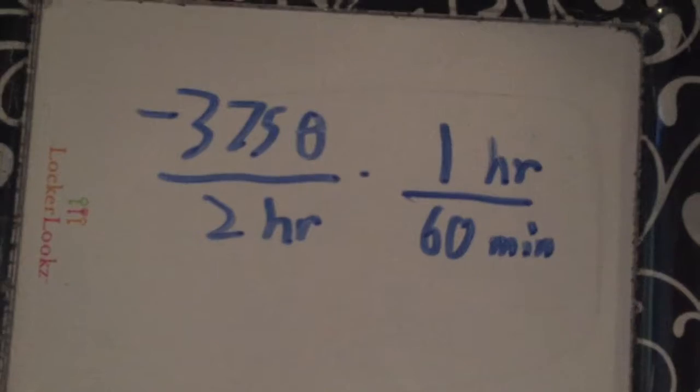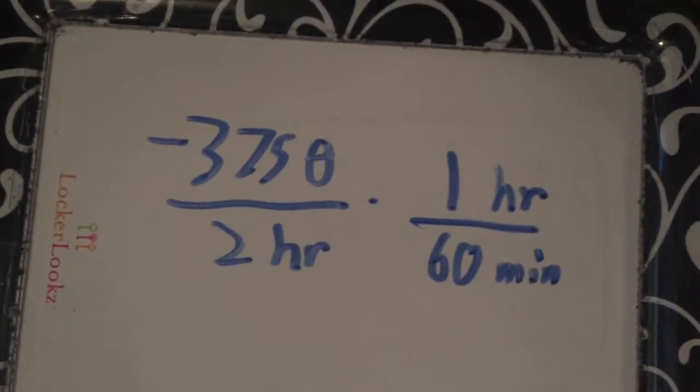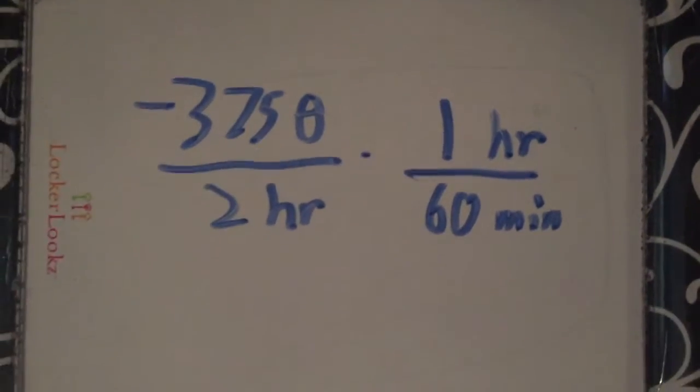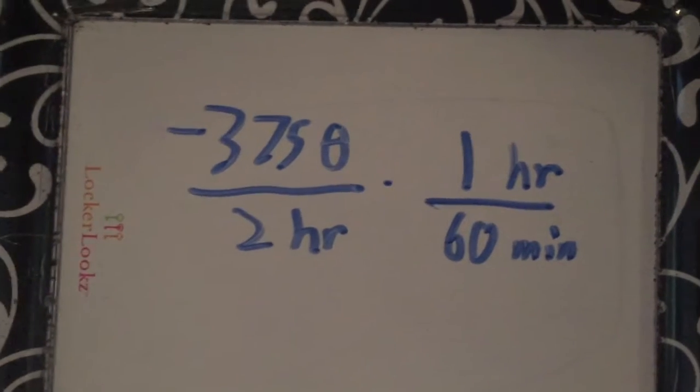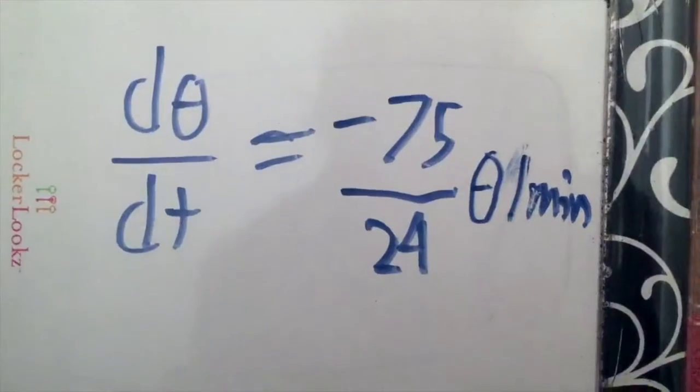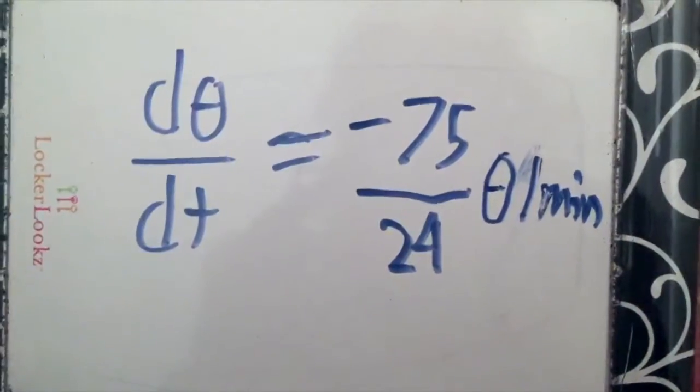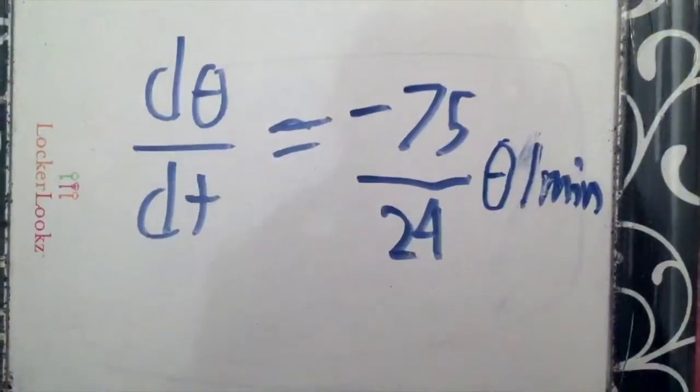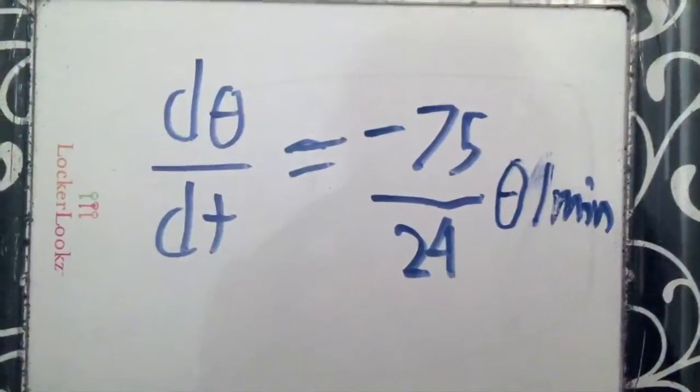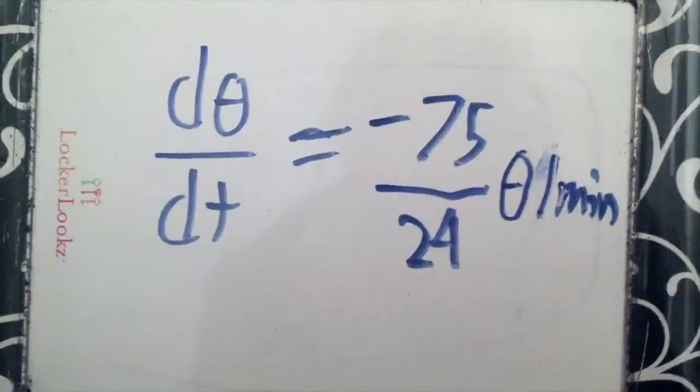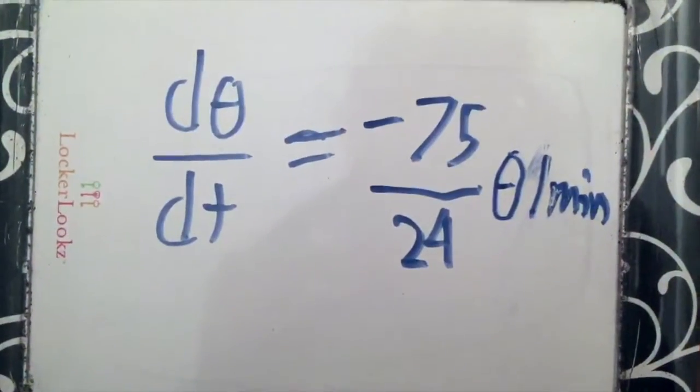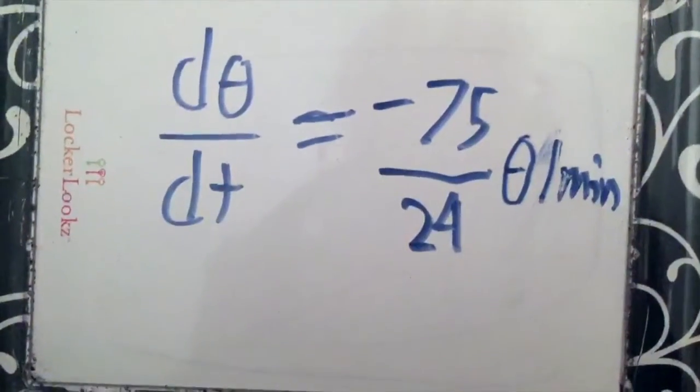Finally we convert radians per hour to radians per minute by multiplying our final answer by 1 over 60. Our final answer, the rate of change for the angle of elevation between us and the plane, is negative 75 over 24 radians per minute.